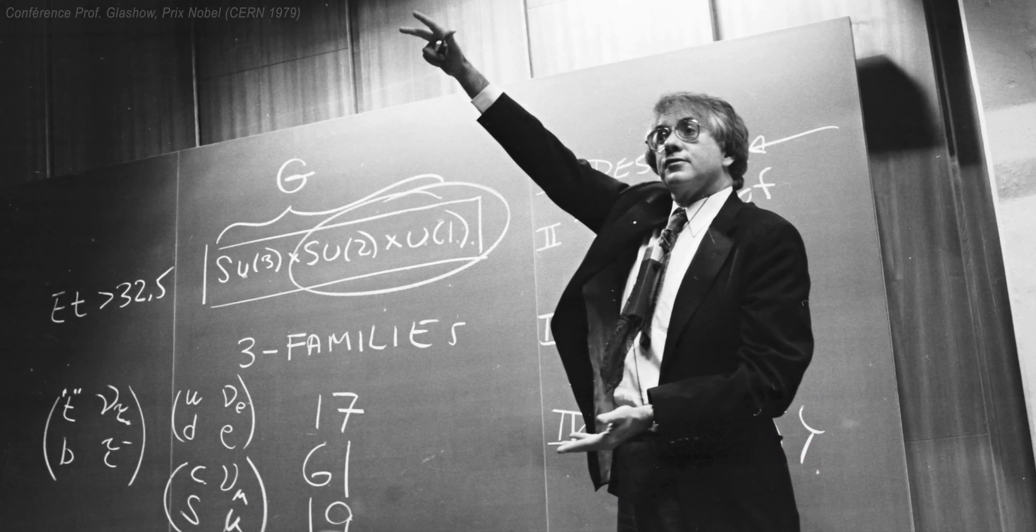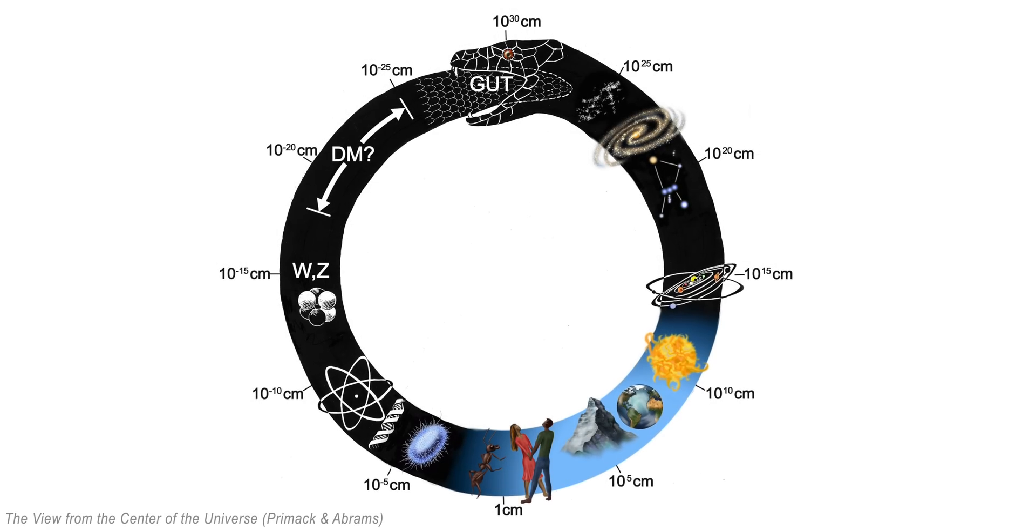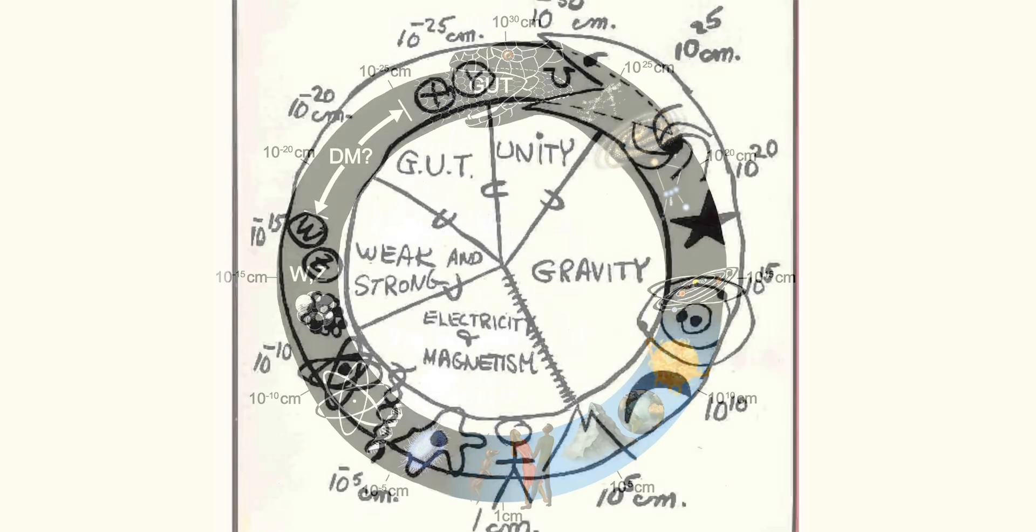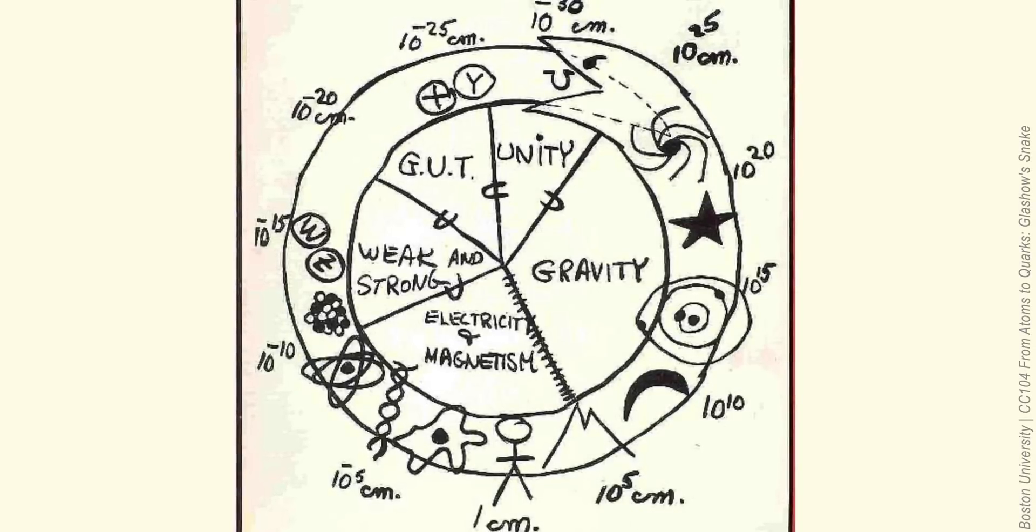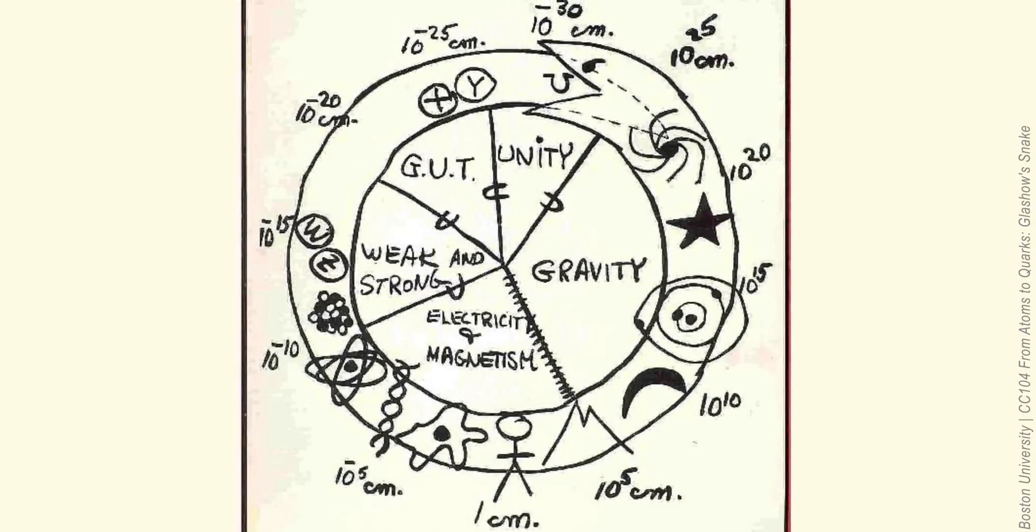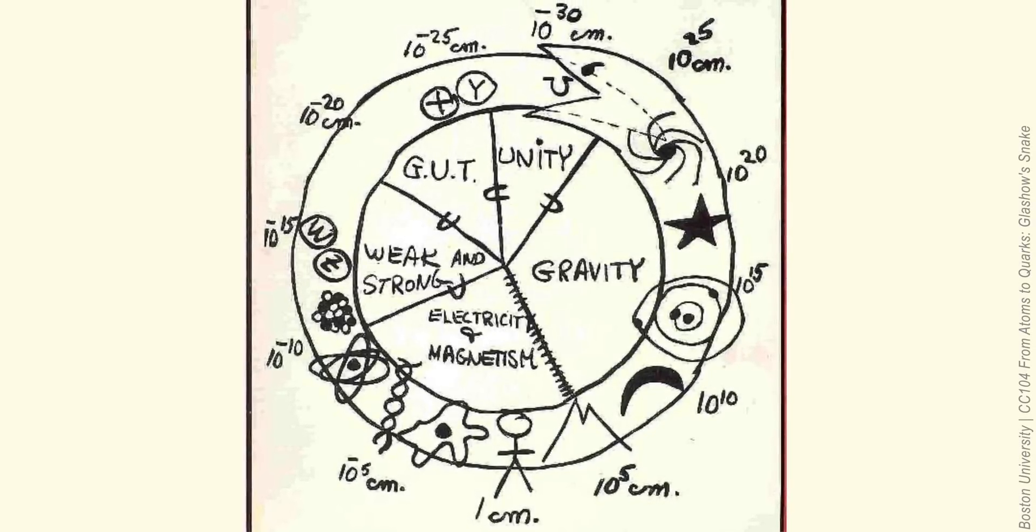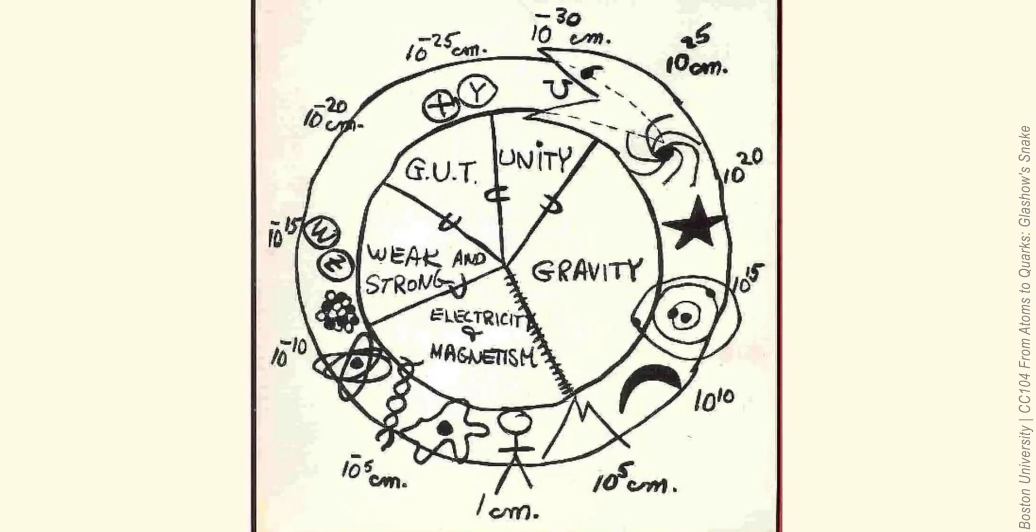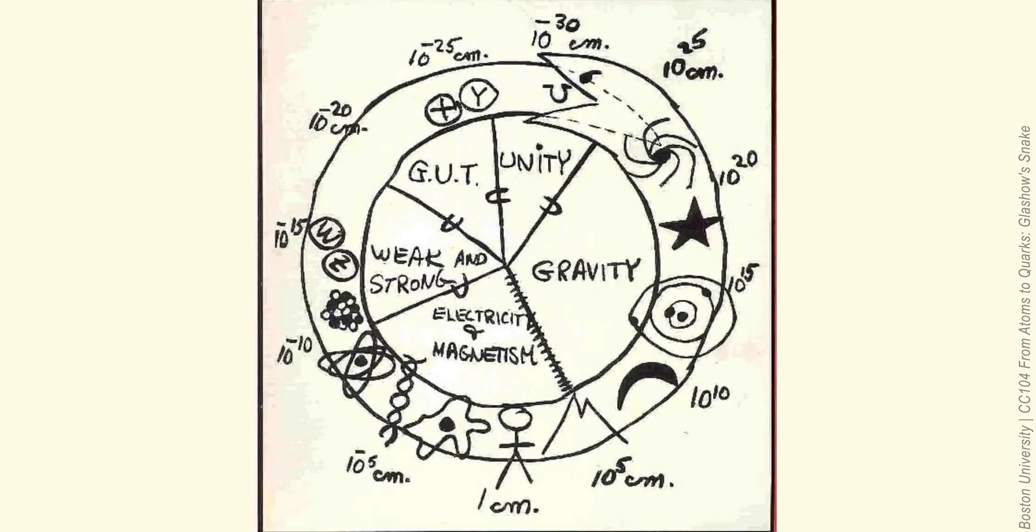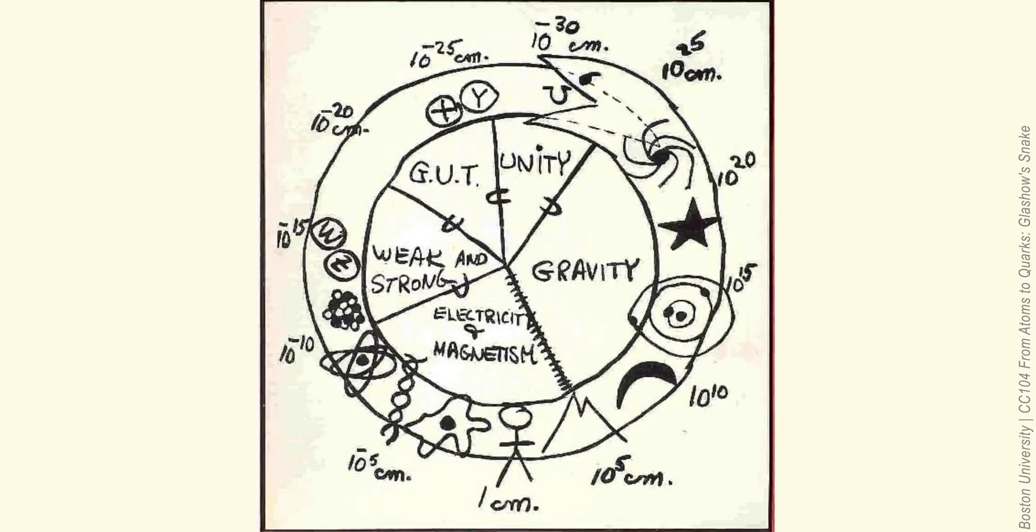It comes in a few flavors but the general idea starts at the Planck scale of the snake's tail with the GUT, or Grand Unified Theory, the class of models that attempt to merge the three gauge interactions of the standard model: electromagnetic, weak, and strong forces into one single force.